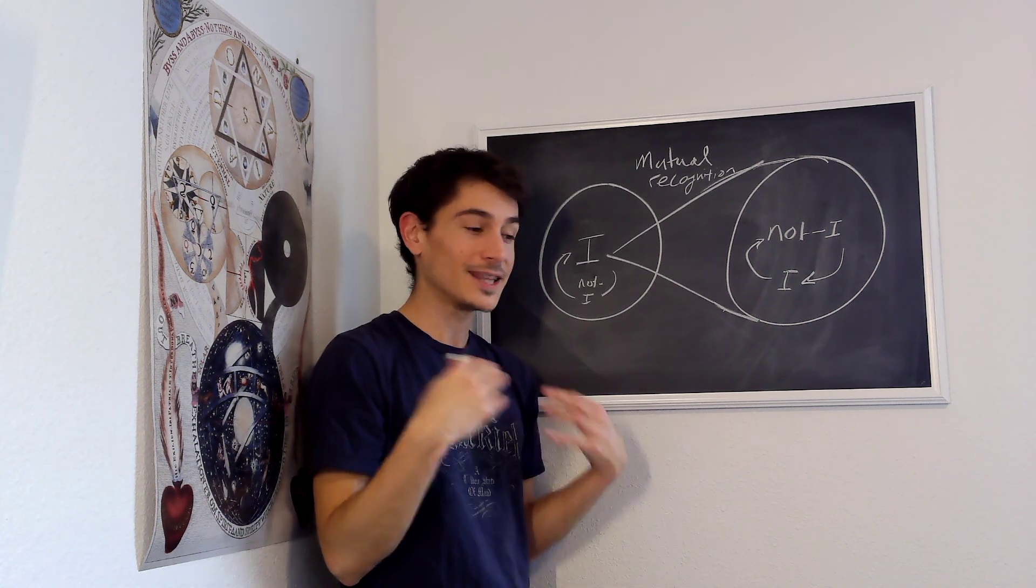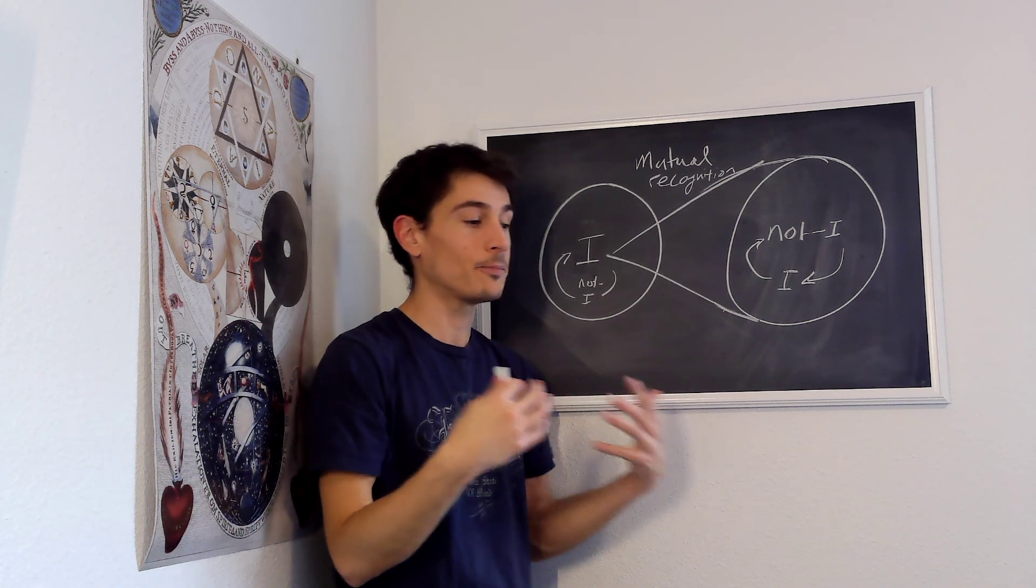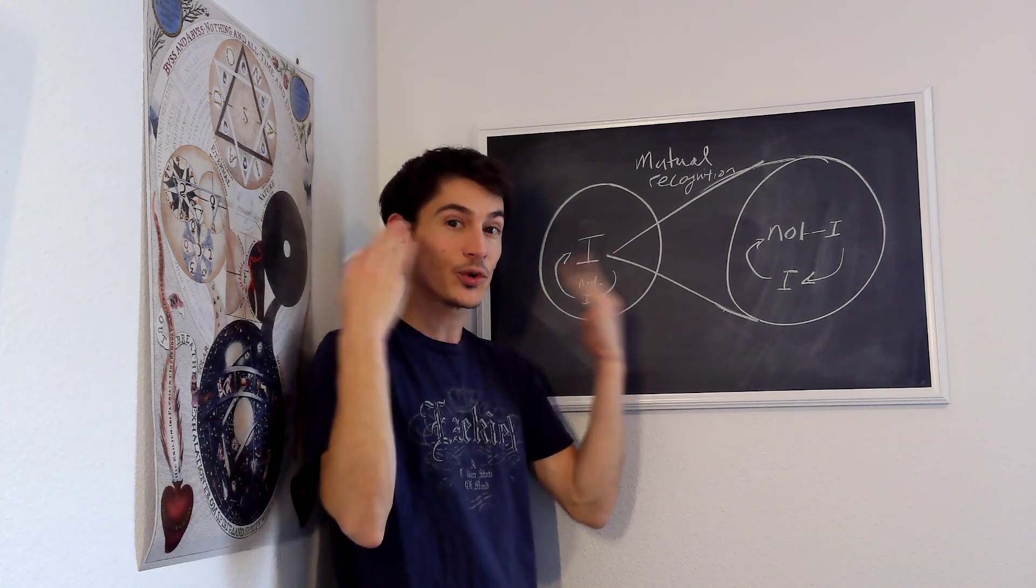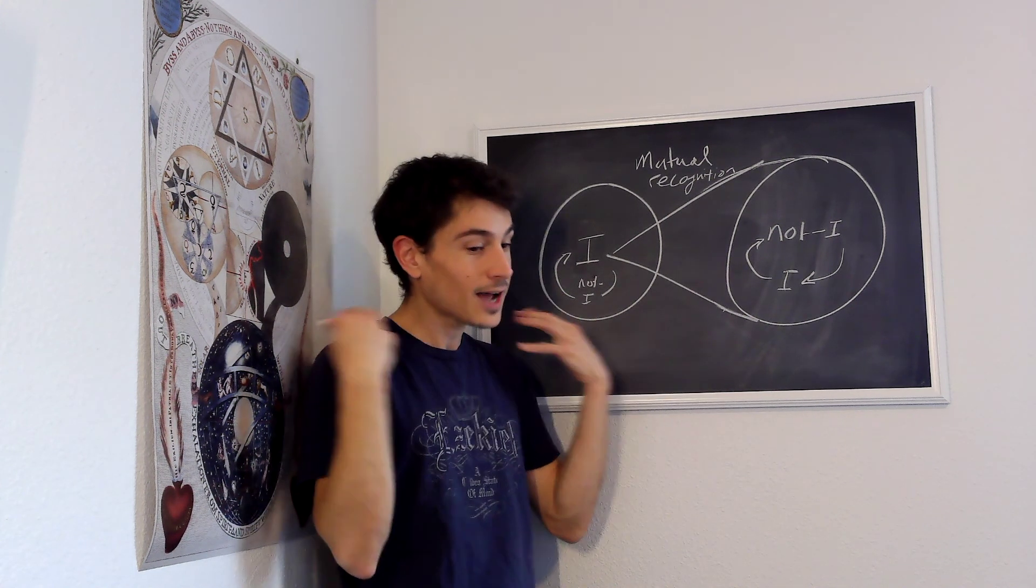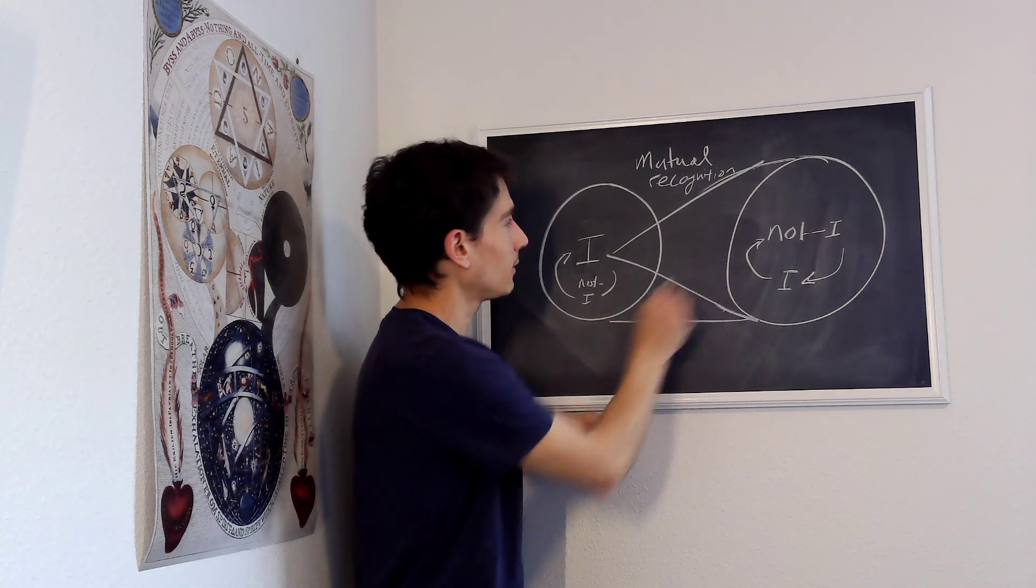So the dialectic continues, and the genesis of all of the categories as well as space and time for Fichte follows from this dialectic, this search for the original act by which the entirety of the world is created. So we end up being for Fichte bound up in an ethical community.